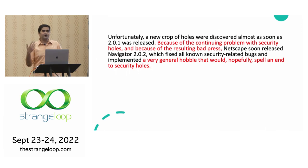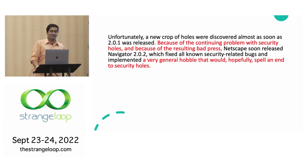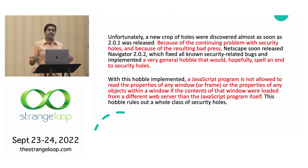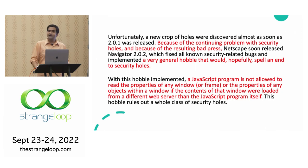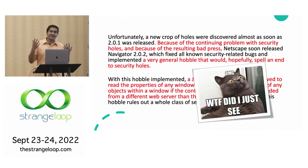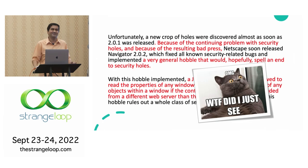Every time they released something, something new kept coming up. They said: we are going to create a general hobble that would end all security holes — which was a big lie; it's been 20 years and we're still dealing with it. The general hobble they created was: you're not allowed to read anything other than your own website. If you are example.com, you're allowed to read stuff related to example.com. This is the birth of the same origin policy — the core security policy. It was just people thinking we need a general hobble, so they came up with: you can hit your own website. My first paper was formally modeling web security and the same origin policy, so reading this was very depressing — I wrote a mathematical model of it, only to learn it's completely based on hobbles.